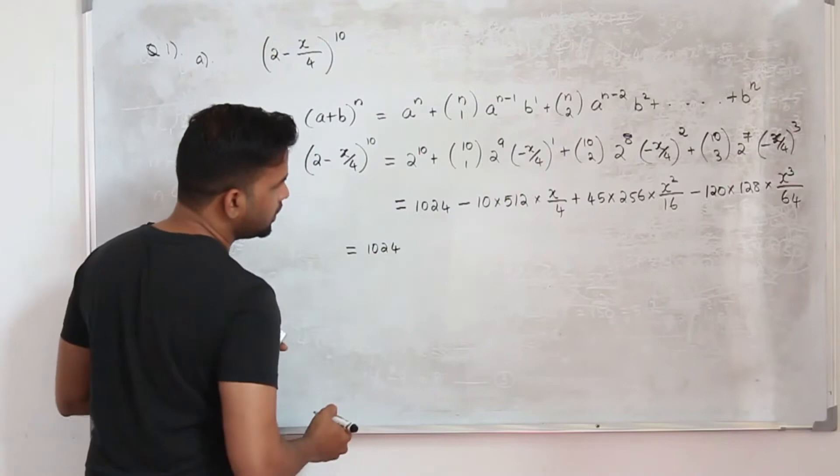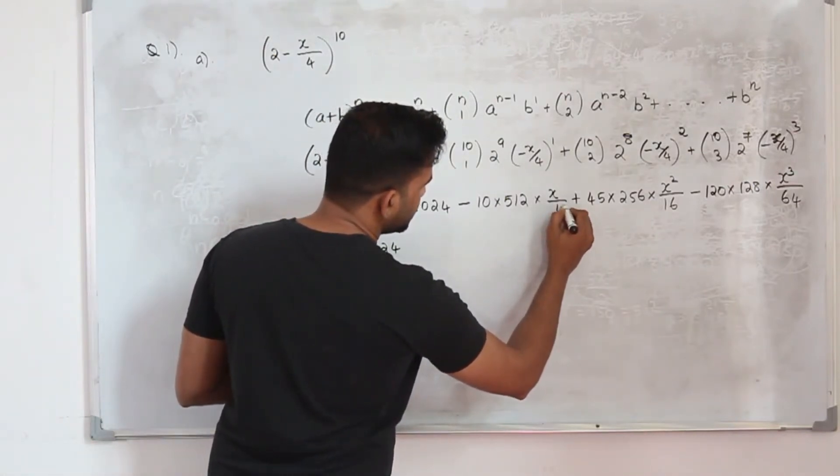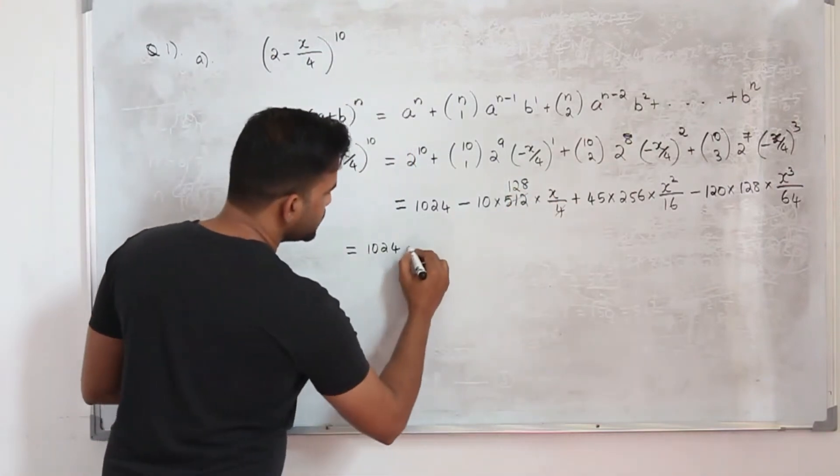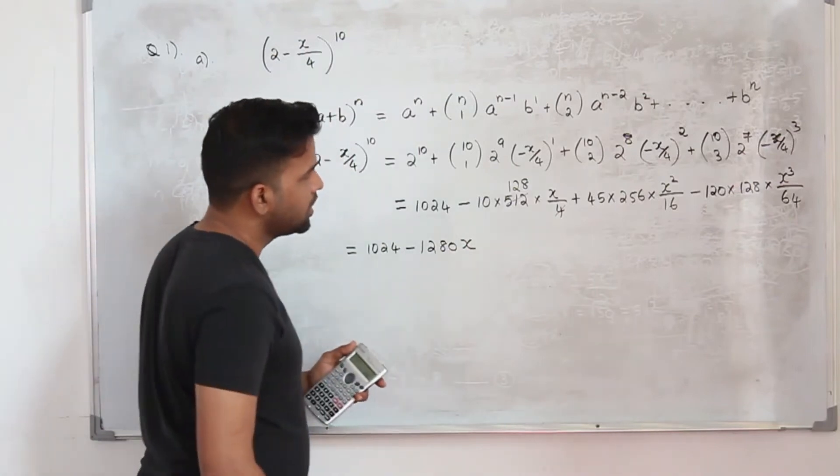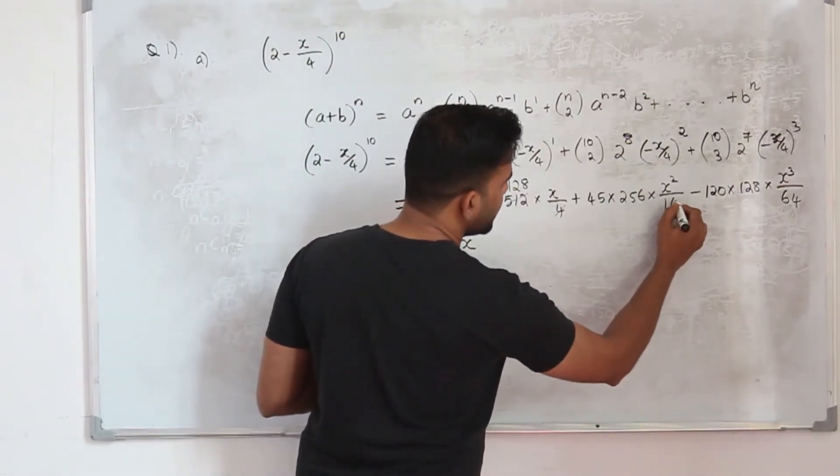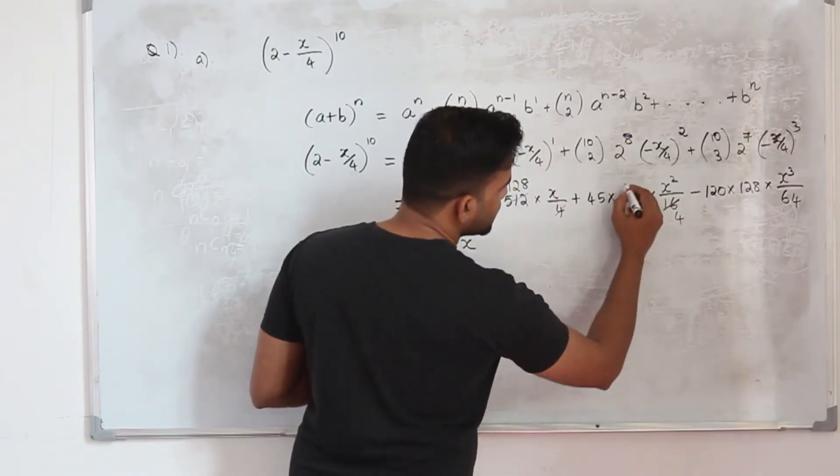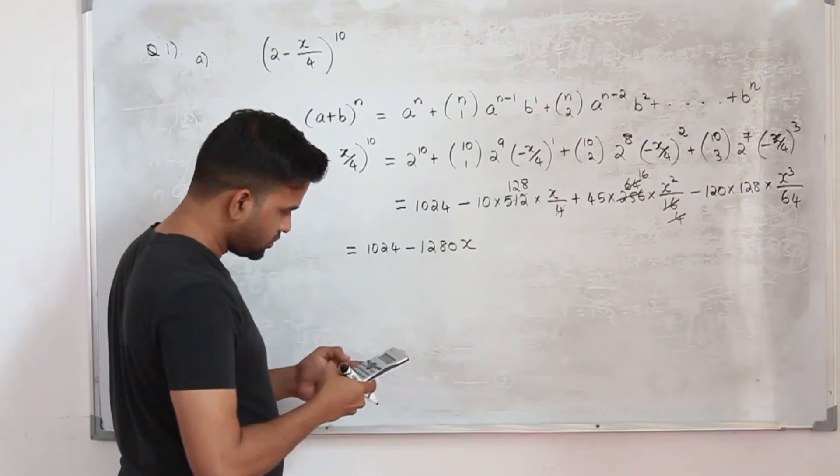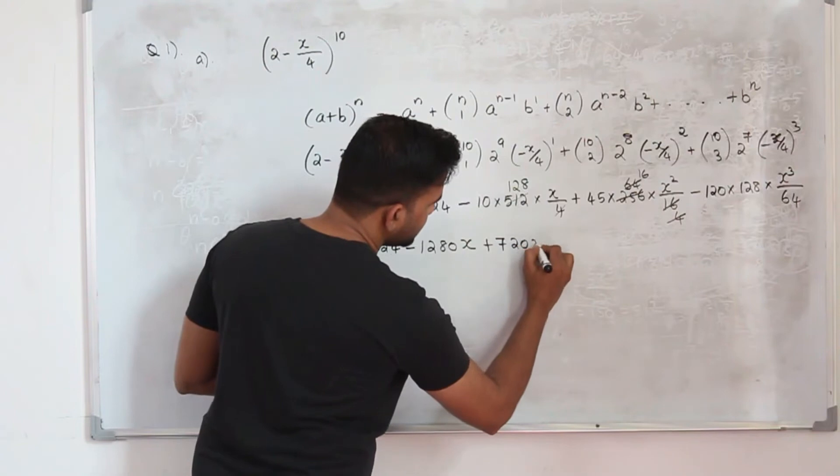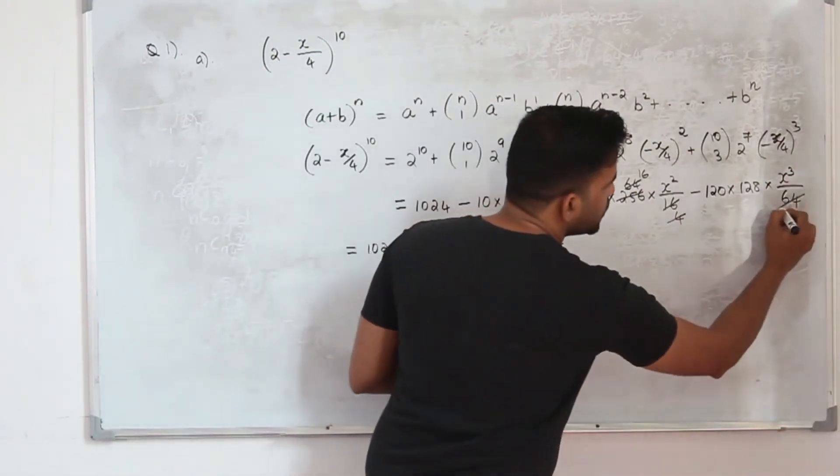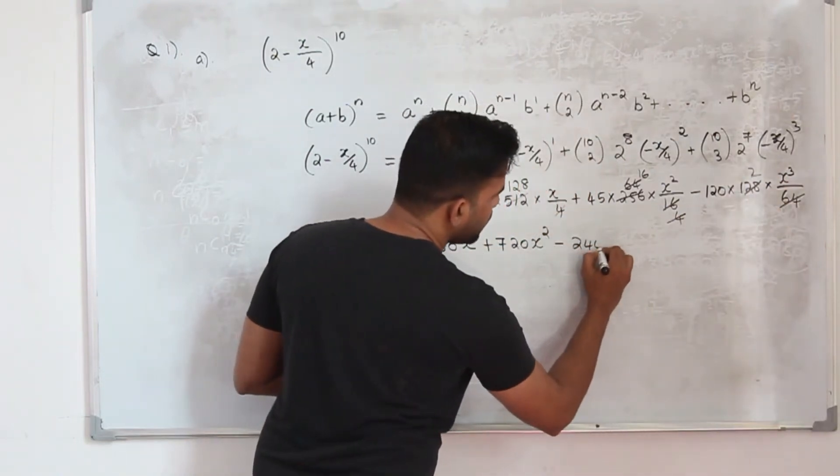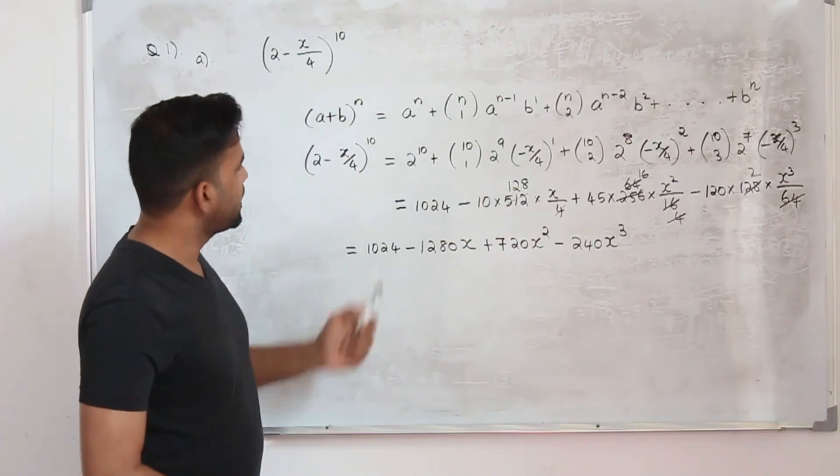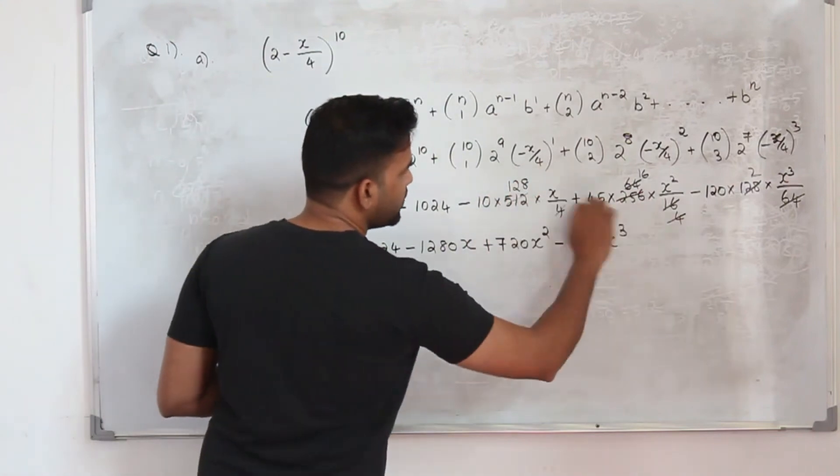We simplify it further. 1024, when you cancel by 4, you get -1280x. And here if you cancel by 4, you get +720x^2. Again can be cancelled by 16, so -240x^3. That's it. So we got the four terms, first four terms of this expansion in ascending powers of x. You need to be very careful when you simplify here.